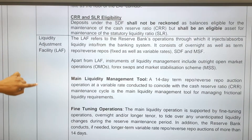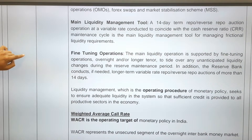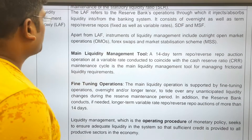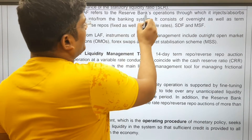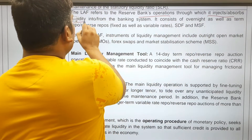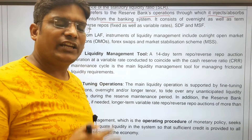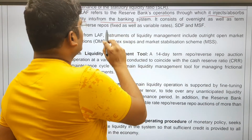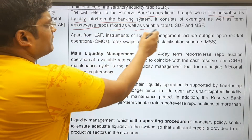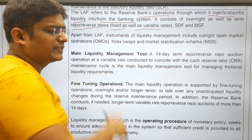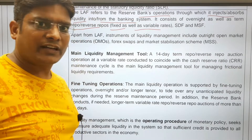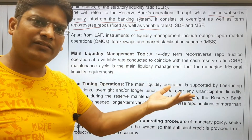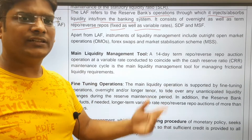Liquidity Adjustment Facility refers to RBI operations through which it injects or absorbs liquidity from the banking system. It injects liquidity through repo and MSF, and absorbs liquidity through reverse repo or SDF. Repo and reverse repo are conducted at both fixed and variable interest rates, where variable rates are worked out through auctions conducted by RBI based on bids placed by banks.